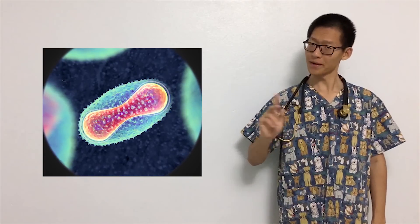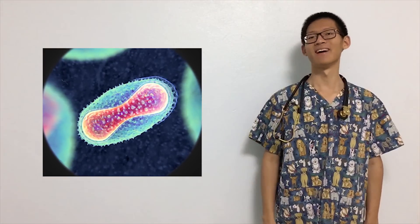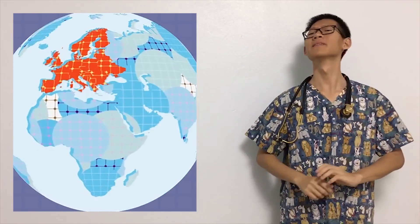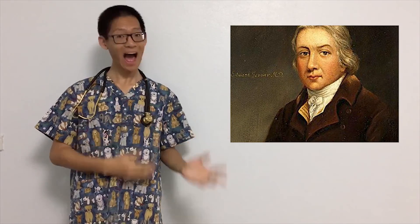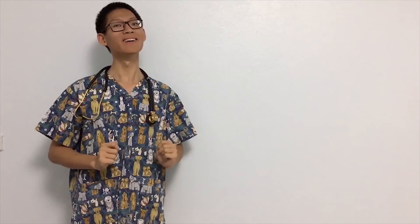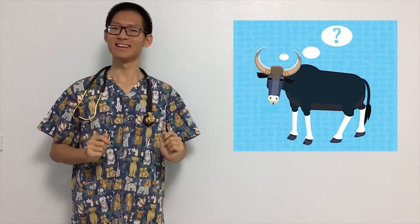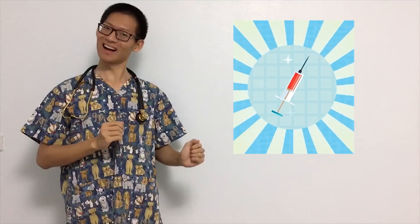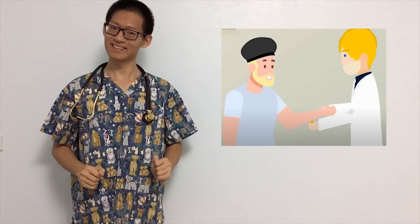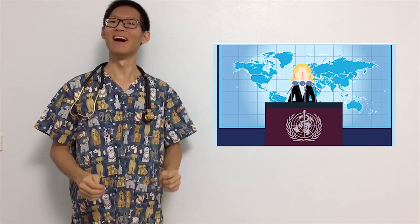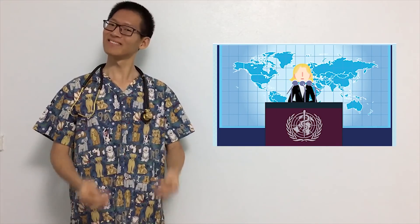Smallpox was once the enemy of all mankind. In the 18th century, about 150 million people in Europe died of smallpox. Edward Jenner found that after suffering from mild vaccinia, he immunized smallpox for life. He is the first person to use the vaccine. Now we have finally immunized against smallpox.